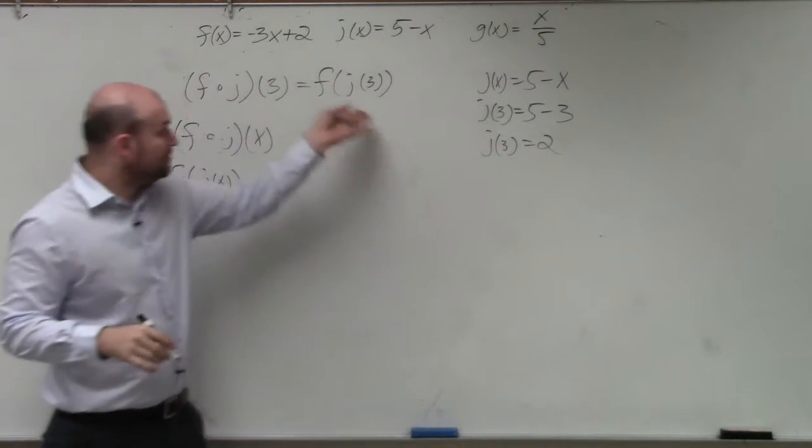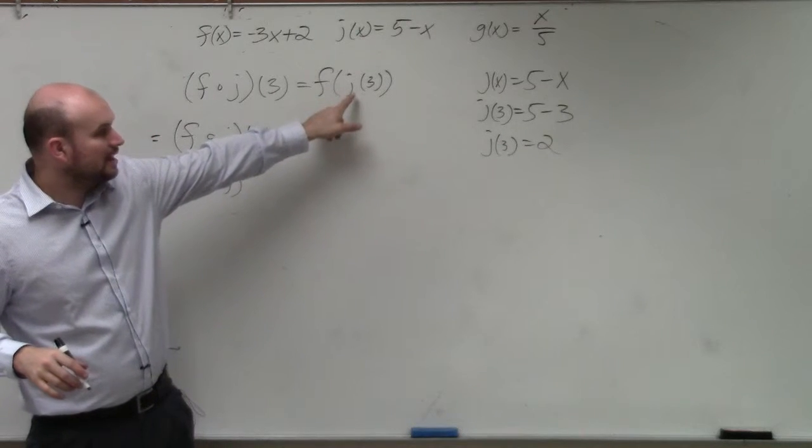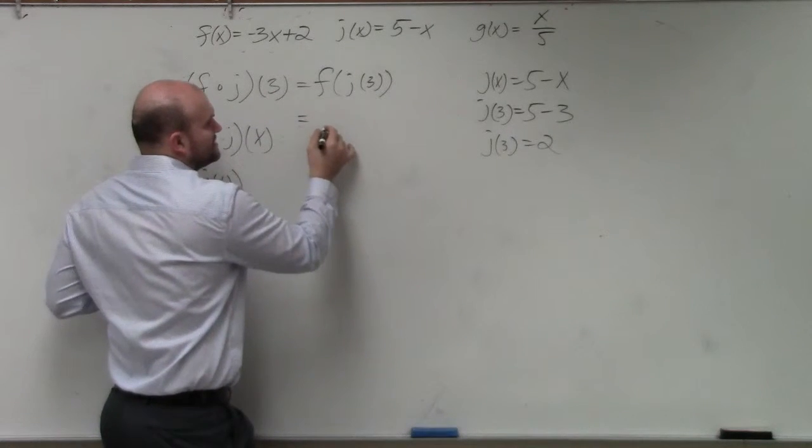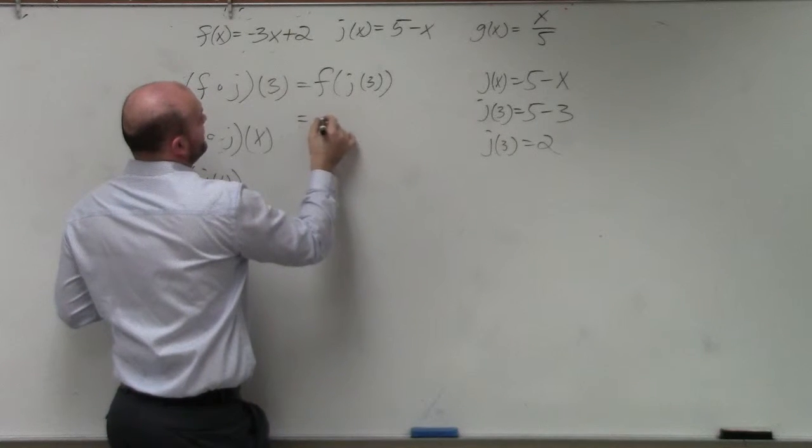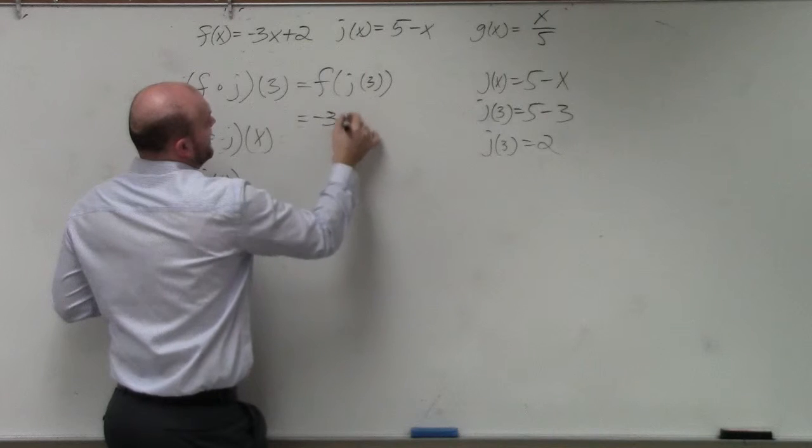Now we take the 2 and plug it in here. So in reality, what we're doing is—let's go and plug this into f of x. Therefore we have negative 3x plus 2.